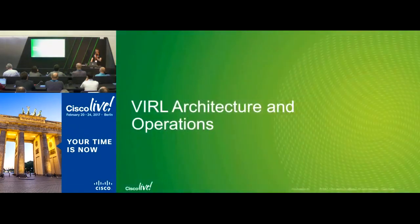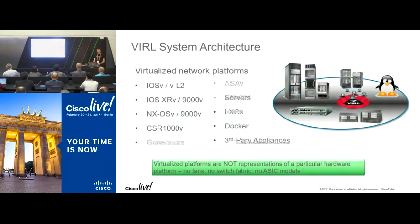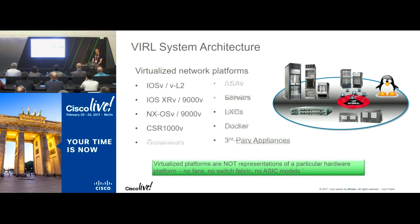For a brief overview of the VIRL architecture: we take reference platforms that would normally run on real routers or other network operating systems and make them run as virtual machines. There's quite a variety of platforms — IOS classic, a layer two version with switching and VLAN capabilities, IOS XRV for XR syntax, NXOS with data center features, and the CSR1000V for IOS XE syntax. We also have the ASA for the firewall, servers to provide application layer functionality, and traffic generators, which can be combined to create quite powerful network scenarios. Third-party appliances can also be integrated.